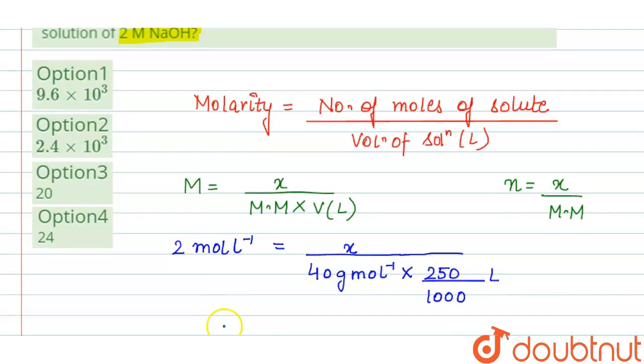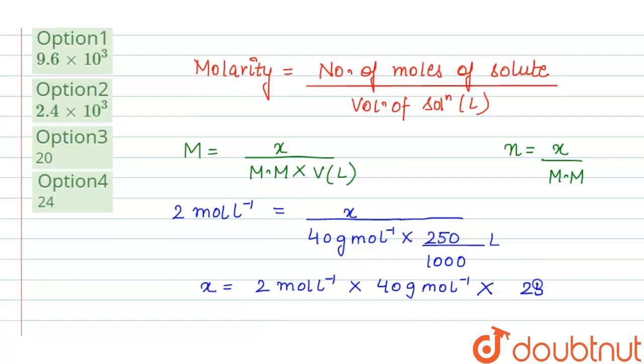So now we will solve this. x will be equal to 2 moles per liter times 40 gram per mole times 250 divided by 1000 liters. From here this will get cancelled out—4 and this will be 10—and the units...